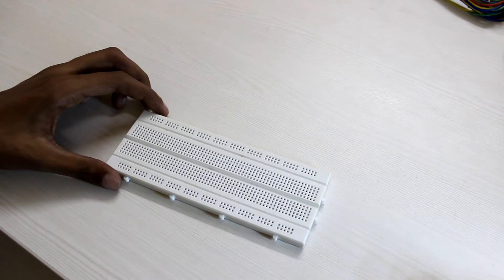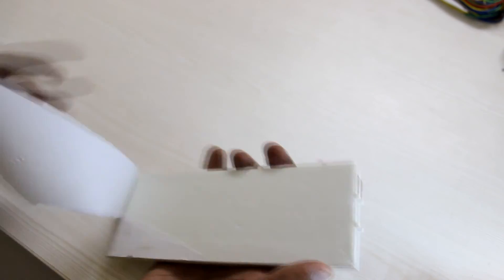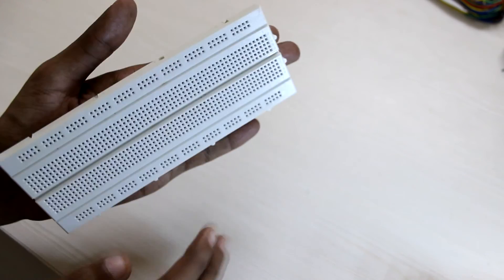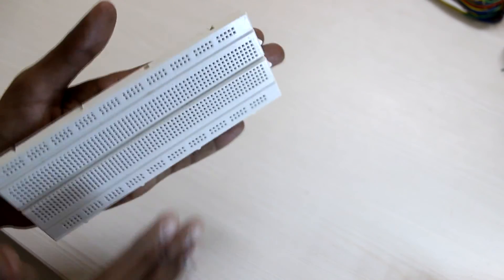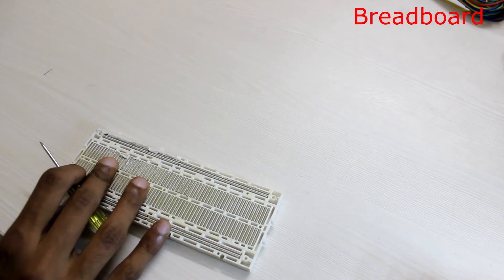This is the breadboard. The best way to learn about electronics is to tear it apart. Let's tear the breadboard now. This is the top layer. This seems to be sticky and I think I can plug it onto the wall. Let's look into it further. Let me remove this sticky layer.